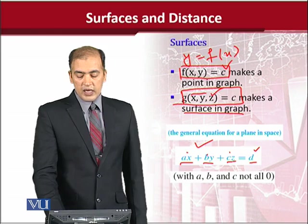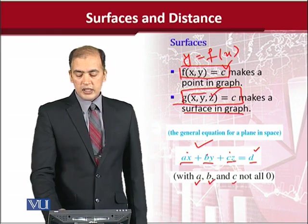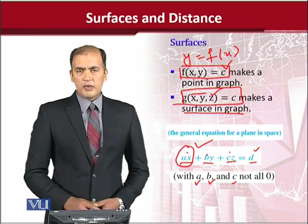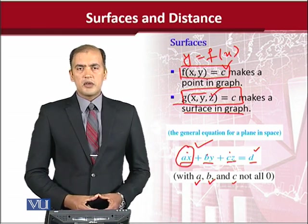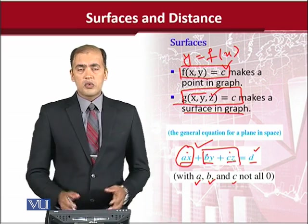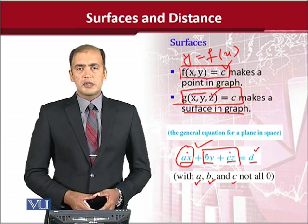There is a caveat and that is A, B, C, these should not be zero. Why? Because if I put A is equal to zero here, x will disappear. It means that we are reducing our analysis only to y and z. That is two variables. And two variables give rise to a 2D diagram.